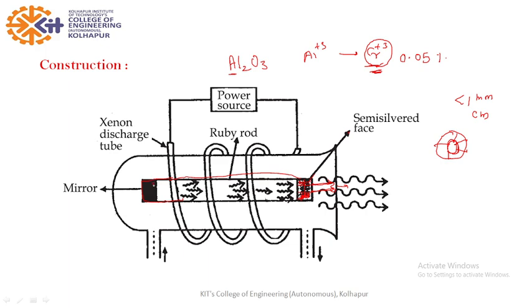Its another end is fully or totally silvered. It is mirror, totally silvered, means totally reflected. So any photon in this direction will be reflected back. And it is surrounded by xenon discharge tube.